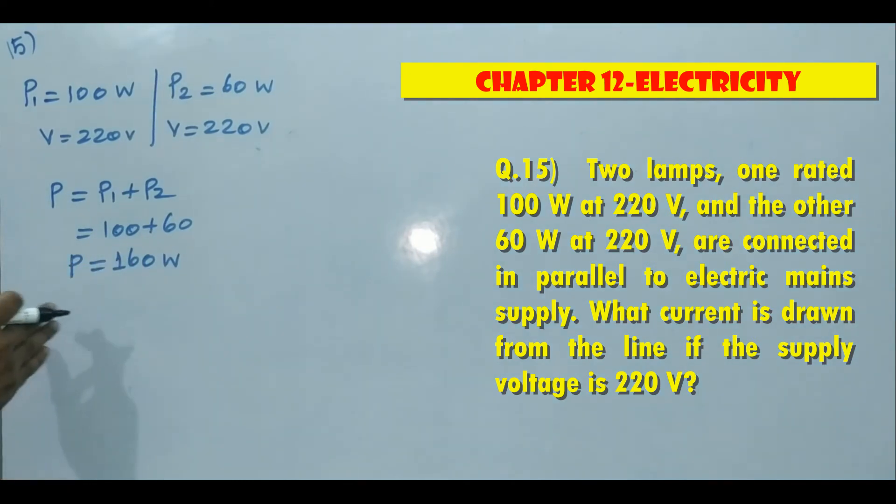They are asking current value. So current, power and voltage, we have one formula: P is equal to VI. If we substitute, we will get I value.